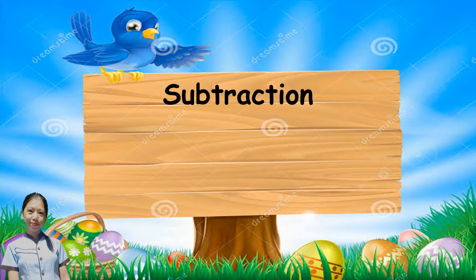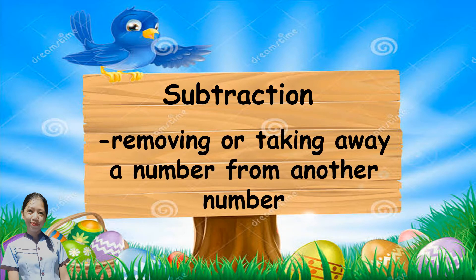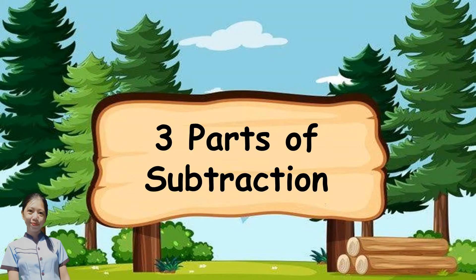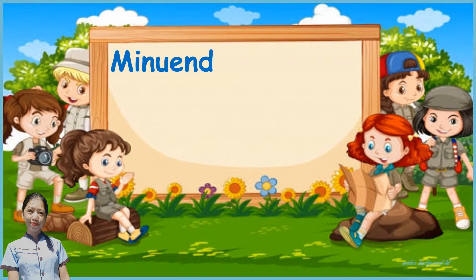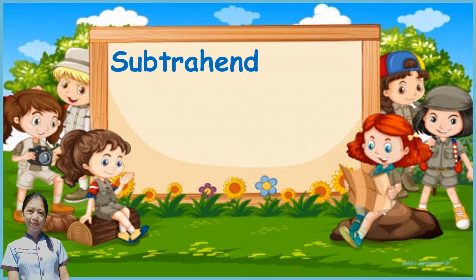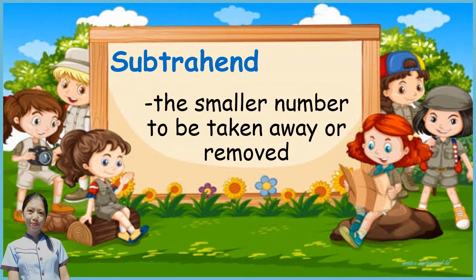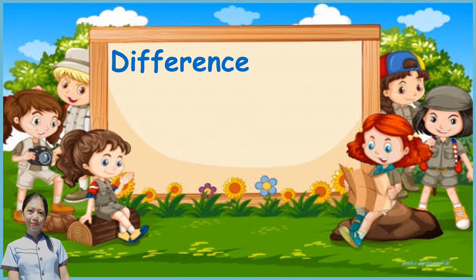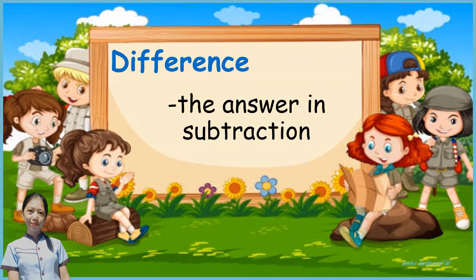The first one is: what is subtraction? Subtraction is removing or taking away a number from another number. And there are three parts of subtraction. The first one is the minuend — it is the bigger number where another number is subtracted from. The second is the subtrahend — the smaller number to be taken away or removed. And the difference — it is the answer in subtraction.